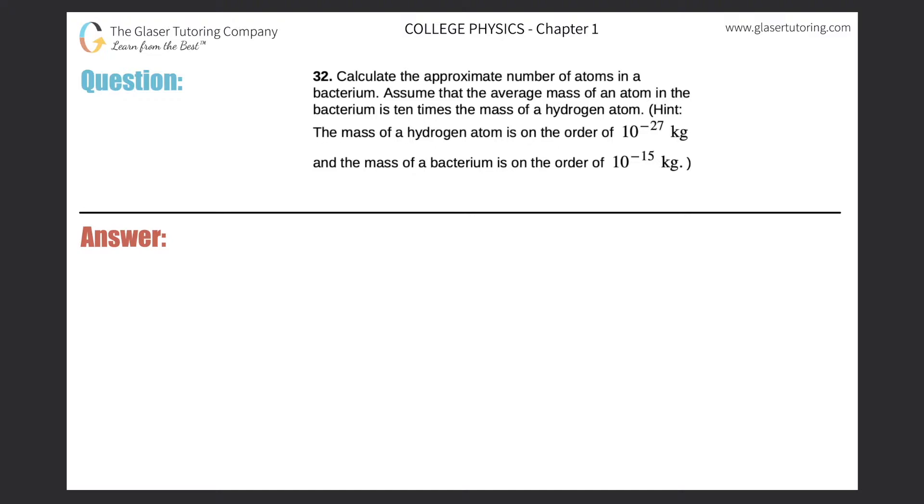Number 32. Calculate the approximate number of atoms in a bacterium. Assume that the average mass of an atom in the bacterium is 10 times the mass of a hydrogen atom.